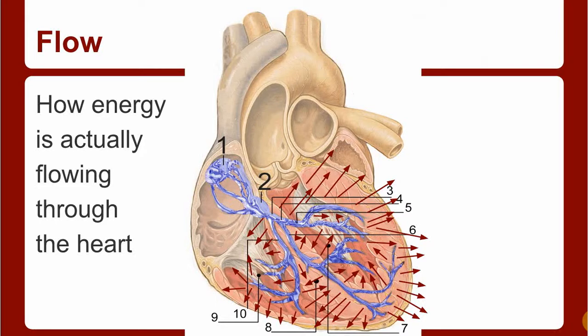This is how energy is actually flowing through the heart—it's leaving these conduction cells and going to all the tissues during contraction. They're all over the place. This is what I meant when I said there's too many to average individually.